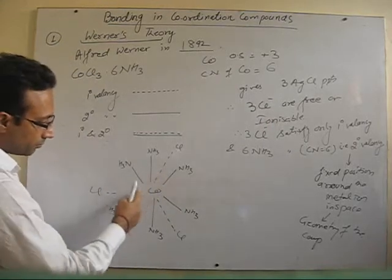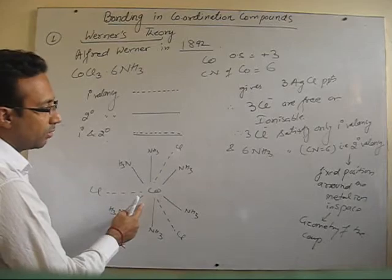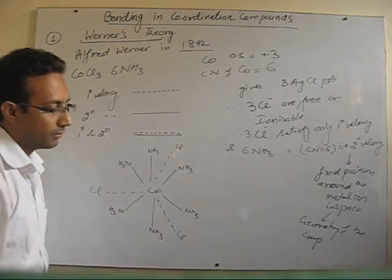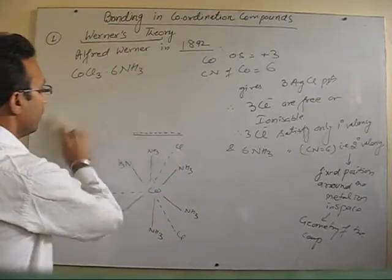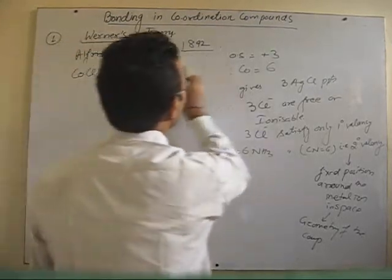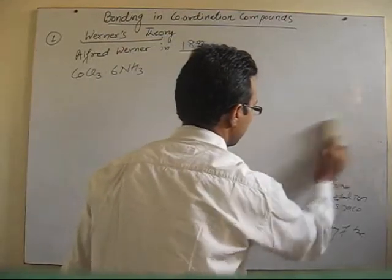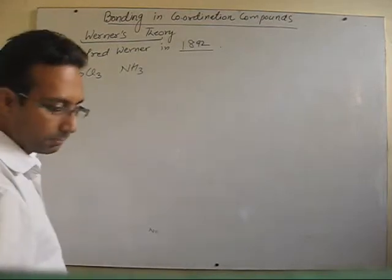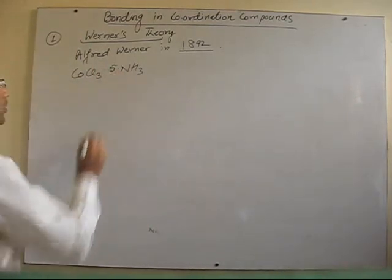This is the structure for this particular compound, where primary and secondary valencies are both satisfied. Now let's take the second compound in this category. In the second compound, the ammonia content is 5 ammonia.